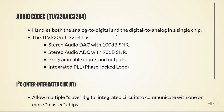To handle audio information, this board has an audio codec — the TLV320AIC3204. An audio codec is a chip that handles both the analog-to-digital and the digital-to-analog conversion. This audio codec has a stereo audio DAC with a 100 dB signal-to-noise ratio, and a stereo audio ADC with 93 dB signal-to-noise ratio. It has programmable inputs and outputs, and an integrated PLL — a phase-locked loop — which we are going to talk about in the future.